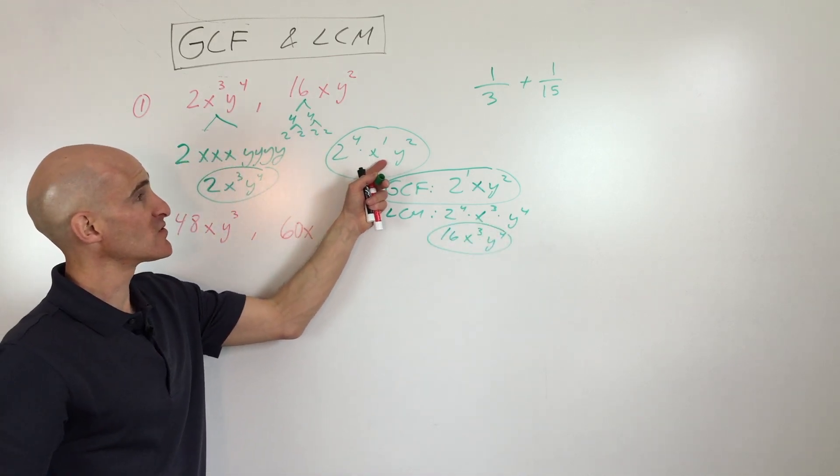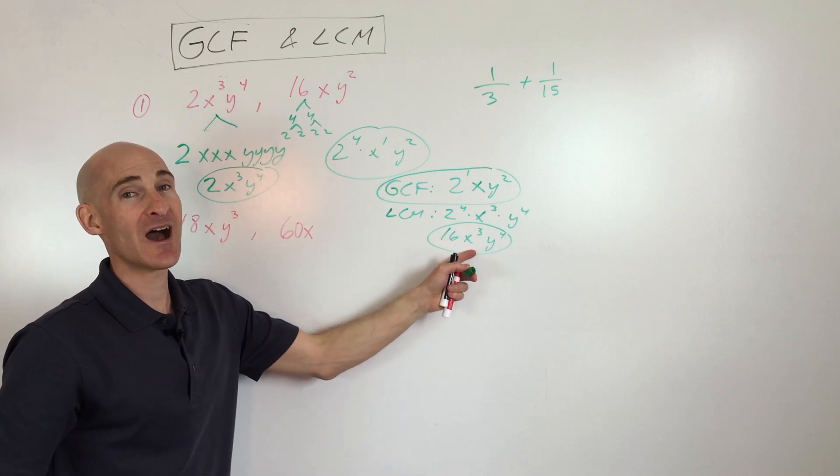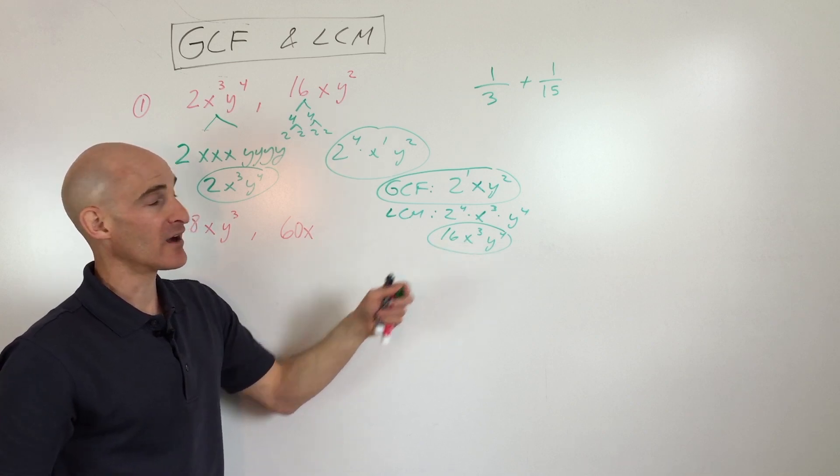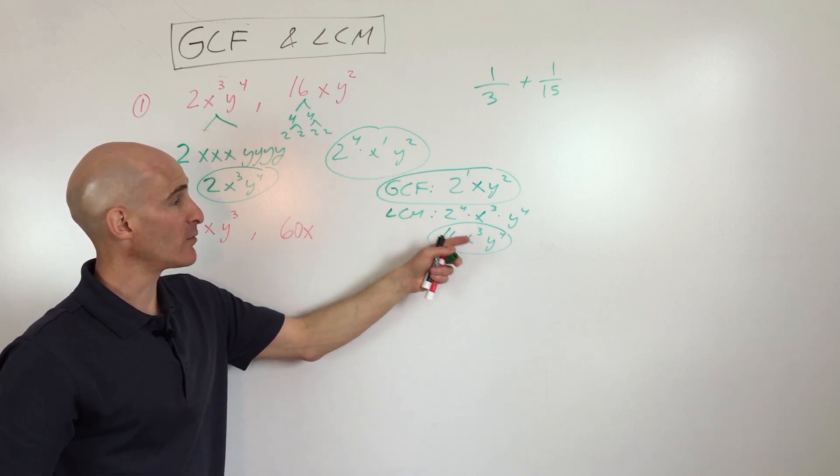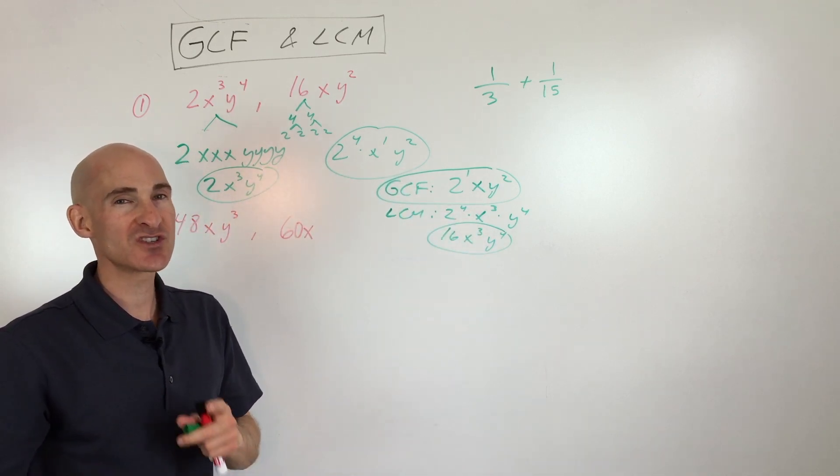So what that means is that if this was our denominator and this was our denominator, this is what we would want to be our common denominator. So that's the lowest quantity that this will be able to go into evenly as well as this will be able to divide into evenly.